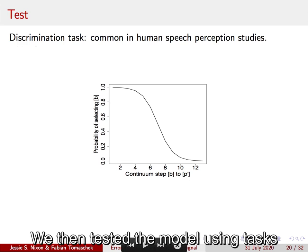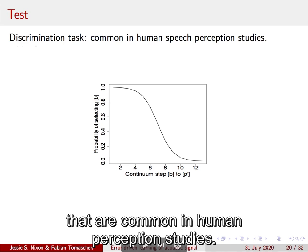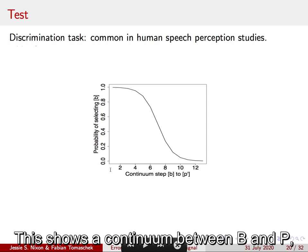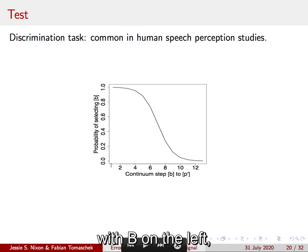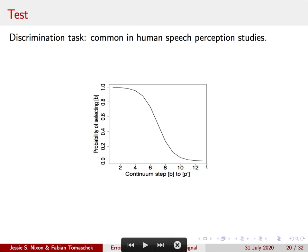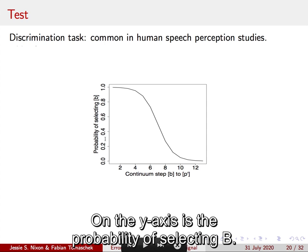We then tested the model using tasks that are common in human perception studies. We produced sound pairs separately and created a continuum between them in Praat. This shows a continuum between B and P, with B on the left, and it gets gradually more P-like across the continuum. On the y-axis is the probability of selecting B.